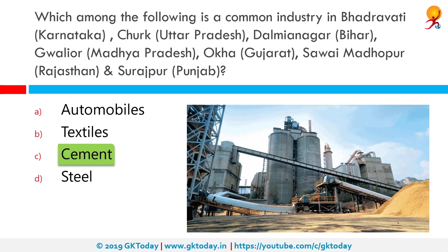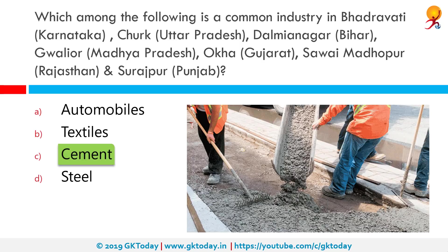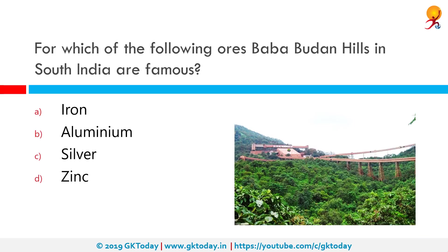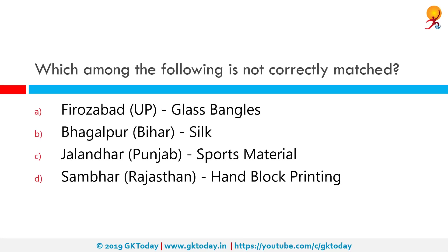The Cement Corporation of India is a central public sector undertaking which has 10 units. For which of the following ores are Baba Budan Hills in south India famous? They are famous for iron. The Baba Budan Giri range includes the highest peaks of Karnataka and is famous for iron ore mining. Other famous iron ore mines are Bailadilla in Bastar, Dalli-Rajhara in Durg district of Chhattisgarh, and Singhbhum in Jharkhand.